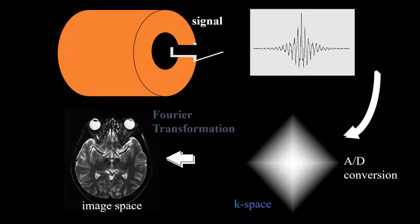This graph shows the transformation of a signal into data, analog to digital conversion, and then creating an image from the stored data.